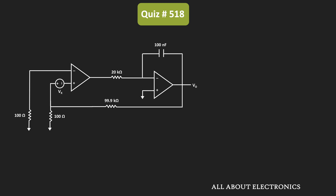Let's say this is the first op-amp and this is the second op-amp. If we see the first op-amp, the negative terminal is connected to the ground terminal via this 100 ohm resistor, while on the positive terminal this Vx voltage is applied. Moreover, here we have positive feedback from output to the input side. That means in the first op-amp, we cannot apply the concept of virtual ground, or we can say that this first op-amp will act as a comparator.